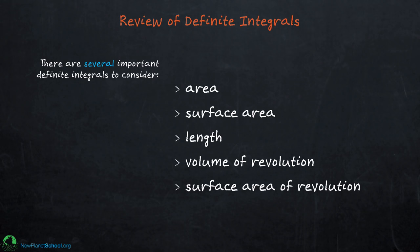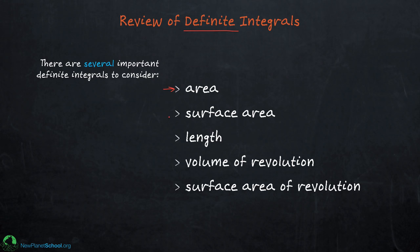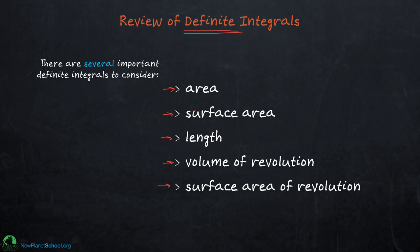We'll start off by looking at definite integrals and go through five different examples: area under a curve, what Grapher calls surface area, the length of a line, the volume of revolution, and the surface area of revolution. These are the five main things that Grapher does in the area of definite integrals. Let's review each one so you'll remember what they are and how Grapher handles them.